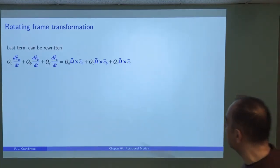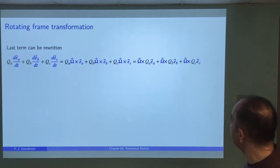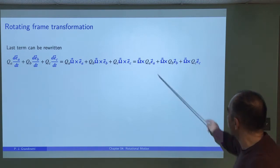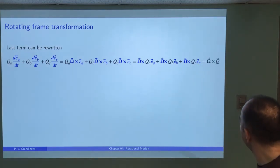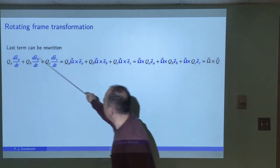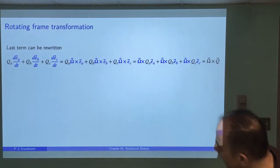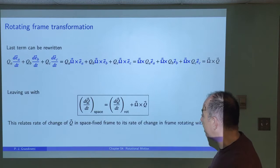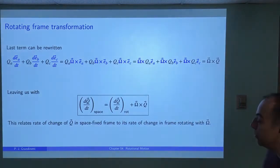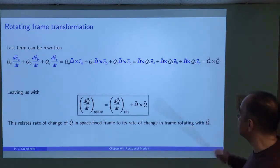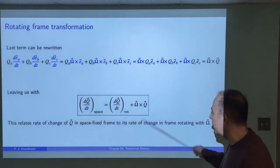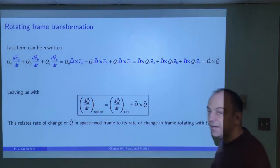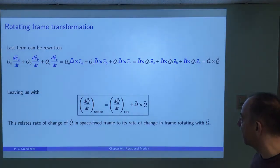Replacing those derivatives with the corresponding cross product and rearranging — moving components qa, b, c next to the unit vectors — we recognize these as just the total vector. So that time derivative becomes omega cross Q. This gives us the rotating frame transformation: the rate of change of a vector in the space-fixed frame equals the rate of change in the rotating non-inertial frame, plus the extra term omega cross Q to account for the time dependence of the unit vectors.